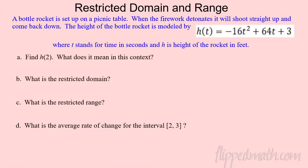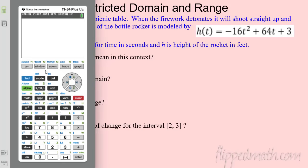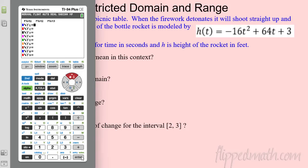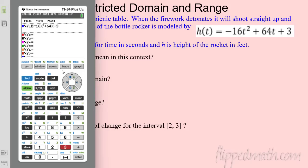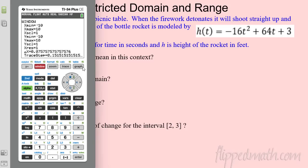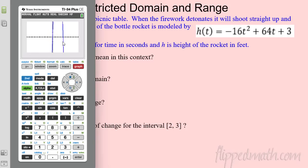Now let's actually model a situation and think about domain and range restrictions. We're shooting a bottle rocket off a picnic table. Here's the function — let's put it in the calculator. Go to Y= and type: negative 16x squared plus 64x plus 3. The -16 represents gravity, 64x is the launch velocity, and 3 is the starting height in feet.